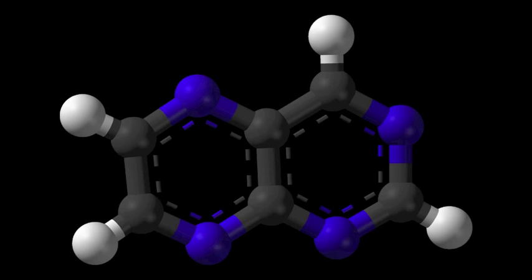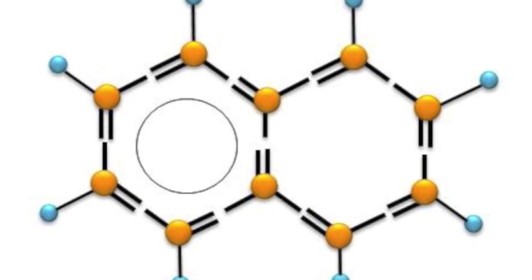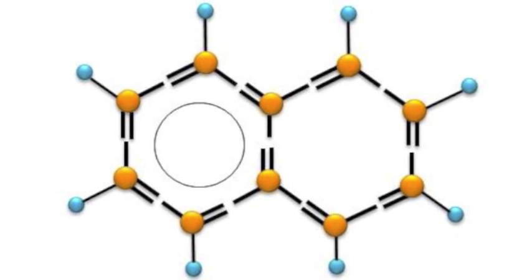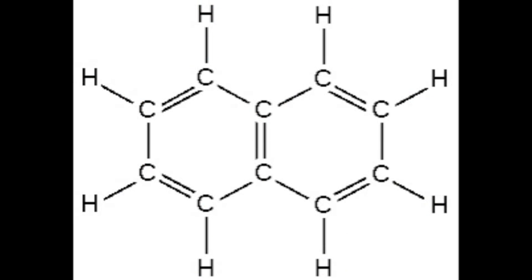Aromaticity and deprotonation. In organic chemistry, aromaticity is a chemical property in which a conjugated ring of unsaturated bonds, lone pairs, or empty orbitals exhibit a stabilization stronger than would be expected by the stabilization of conjugation alone.